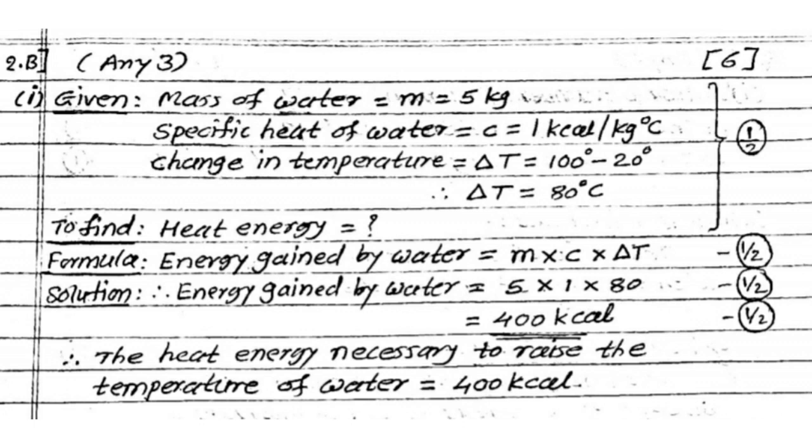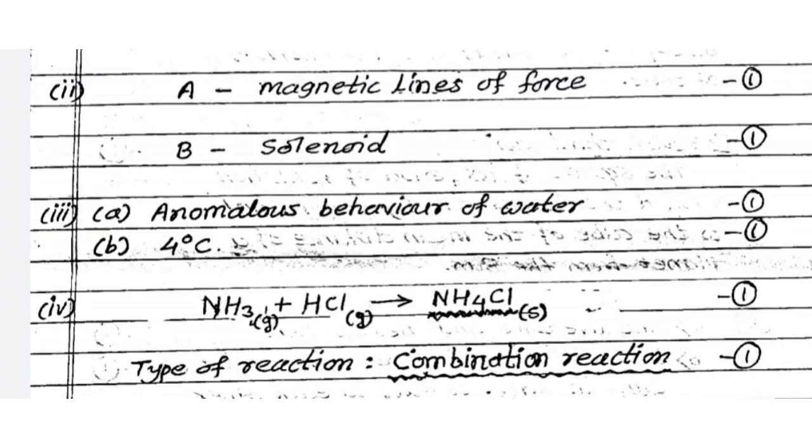In case of numerical problems, you write the answer in proper way. Given and to find you are getting half mark. Write the correct formula, you are getting half mark. Then in solution substitute the correct value at correct place, half mark. And your final answer with correct unit you are getting half mark. Like that way 2 marks distribute for your numerical problem.